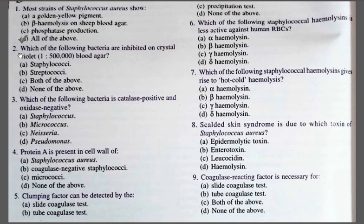Question number two: Which of the following bacteria are inhibited on crystal violet blood agar at 1:25,000 concentration? Option A: Staphylococci; Option B: Streptococci; Option C: Both; Option D: None of the above. The correct one is Option A, Staphylococci. Staphylococci are inhibited by aniline dyes — they are sensitive to aniline dyes and cannot grow in the presence of crystal violet, but Streptococci can grow.